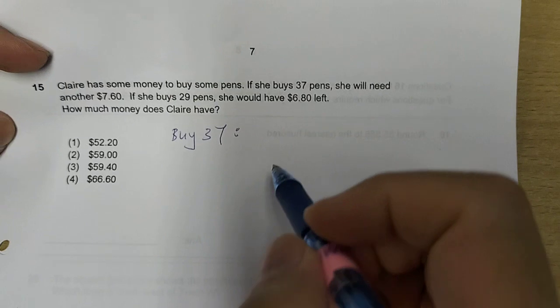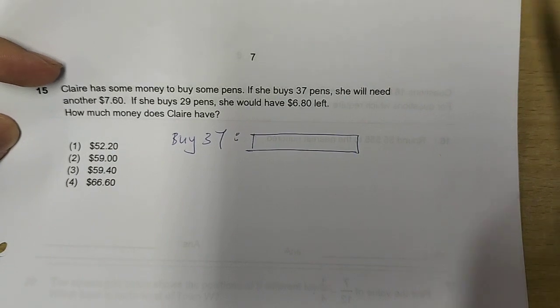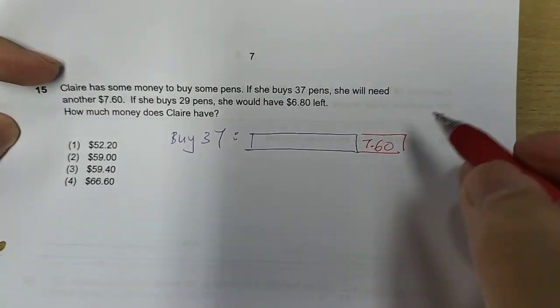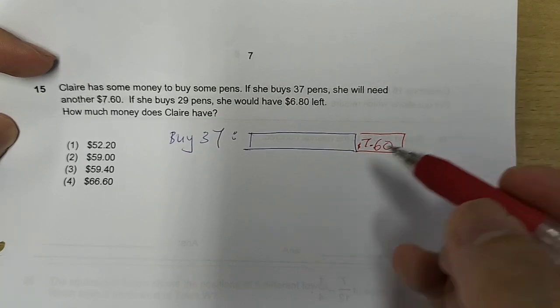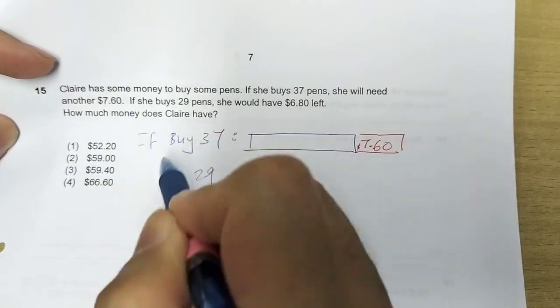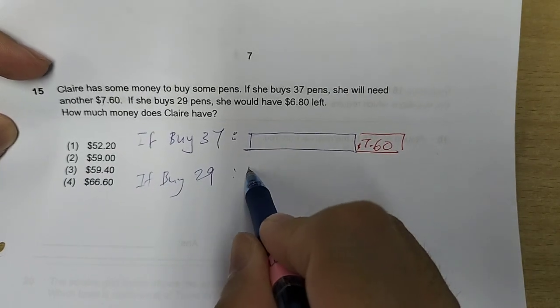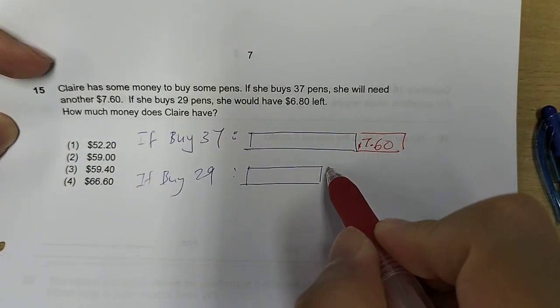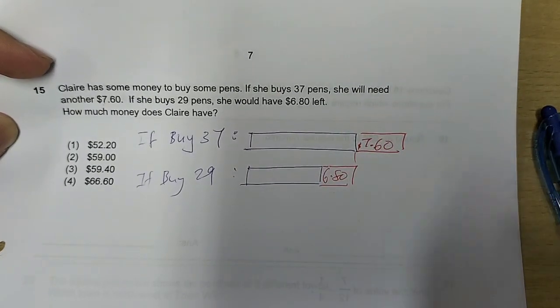So, if she buys 37, that means that she will spend all her money, but not enough. Now, she will still need this that she didn't have. $7.60 that she doesn't have. So, she's short of the money that she needs. If she buys 29, she would have enough money to buy 29. And she will still have some money left. How much left? 6.80 left.